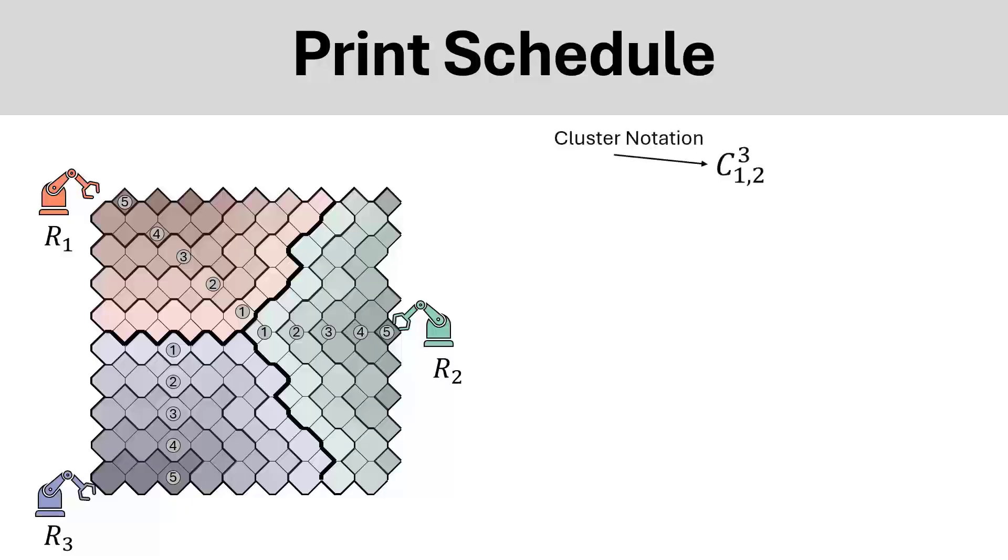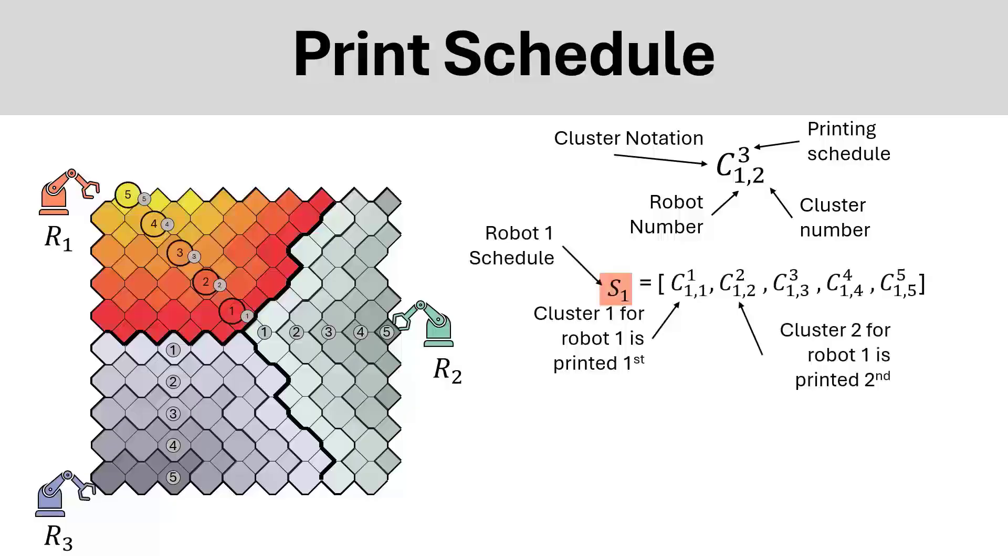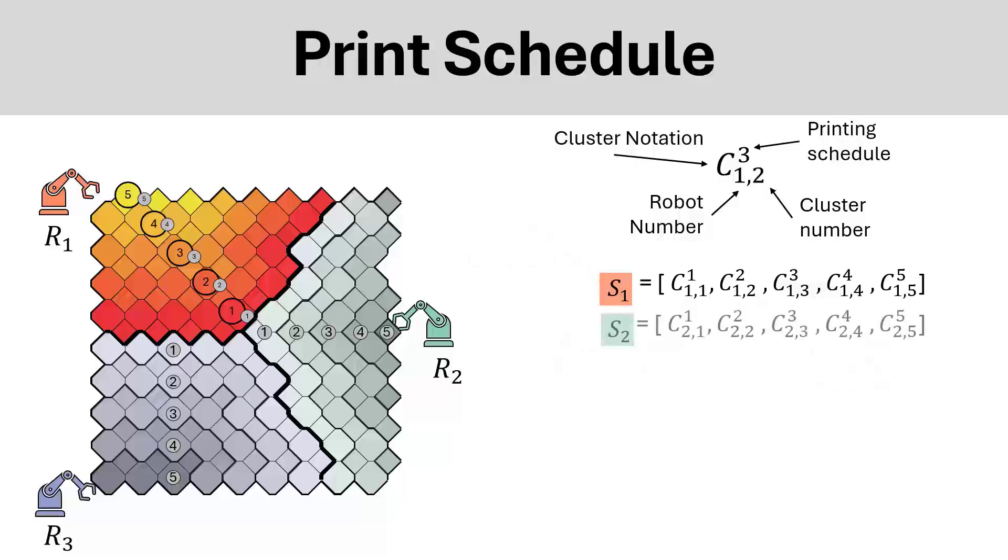In order to find the optimal sequence, we develop a cluster notation which consists of the printing schedule, the robot number, and the cluster number. This allows us to get a schedule per robot, which in this example, cluster 1 for robot 1 is printed first, cluster 2 for robot 1 is printed second. We can then create a schedule for all robots.